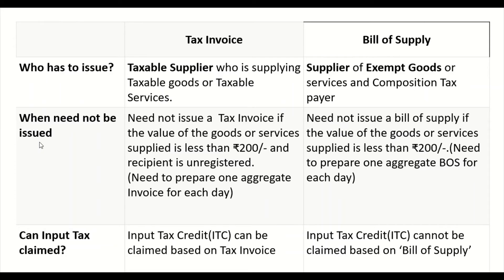A tax invoice need not be issued if the value of goods or services supplied is less than 200 rupees and the recipient is unregistered. When both these conditions apply, no individual invoice is needed, but one aggregate invoice must be prepared for each day. Similarly, a bill of supply need not be issued if the supply value is less than 200 rupees, but again, one aggregate bill of supply must be prepared for each day.